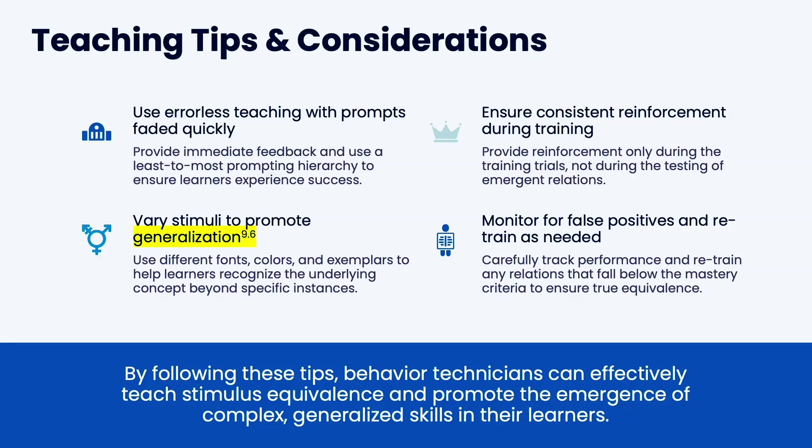Ensure consistent reinforcement during training. Provide reinforcement only during training trials, not during testing of emergent relations — you don't reinforce emergent relations. If you do, the learner will expect reinforcement and that's not the point. The point is for the emergent relation to happen without discrimination training. Once they learn to find those connections they'll do it all the time. They'll become too reinforcement-dependent if you reinforce emergent relations. Monitor for false positives and retrain as needed.